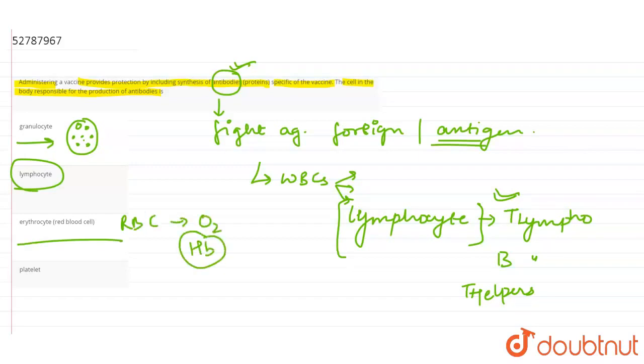Kyunki idar present hota hai hemoglobin. Platelet kya karte hain ye provide karte hain surface taaki ye jo foreign fight hai foreign antigen aur antibodies ke beech mein ye ho sake. Toh aap kabhi bhi dekhenge jabhi bhi koi hamara body antibodies lad rahe honge antigen se platelets ka jo number hota hai wo hamesha down ho jata hai.